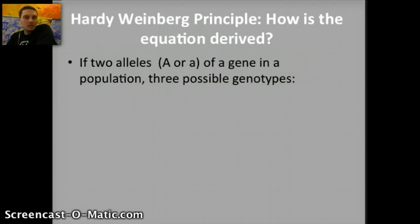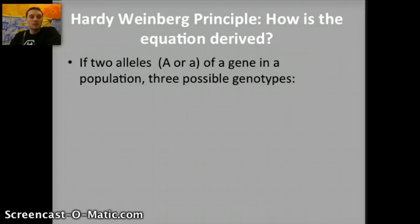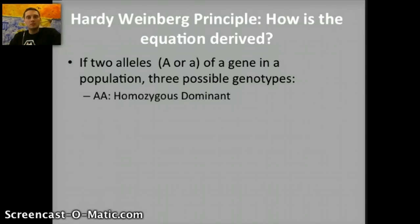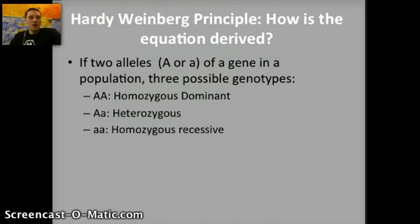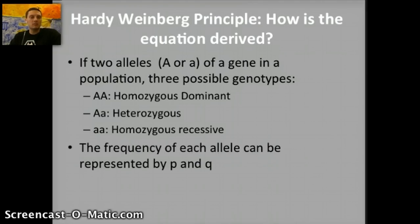To look at how this equation is derived, we want to look at the different combinations of alleles in a population. If we're looking at a gene that has just two alleles for a particular trait, there are three different possible genotypes. The frequencies of each allele can be represented by the letters P and Q, and we're going to use these to calculate the frequencies.